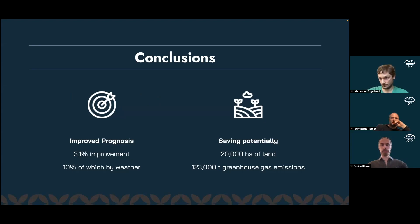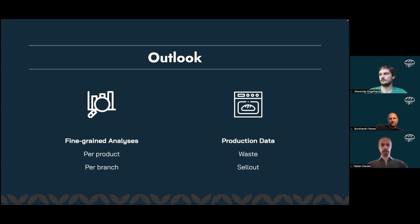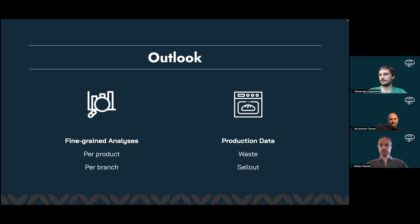The different branches are affected differently by the weather, which leads us to our outlook. To further improve the model, we suggest a more fine-grained analysis investigating feature importance for each product in each bakery and probably also differing by season, which we think would be quite useful for more precise sales forecasts. Furthermore, it's worth mentioning that we had turnover data here, and thus didn't know about actual food waste or sellouts. Our model assumes the turnover a bakery makes is not capped by sellouts, which is quite an assumption. Getting our hands on production data might actually further improve prognosis.